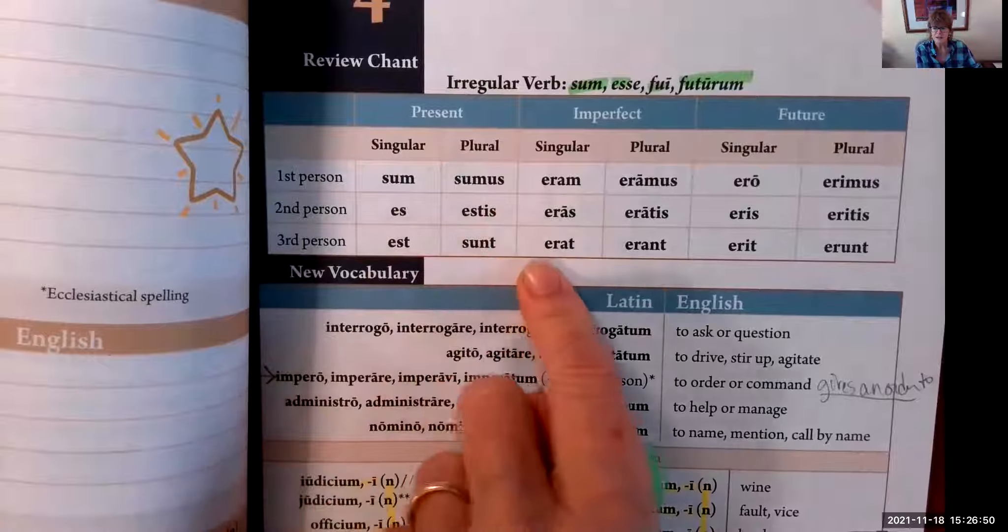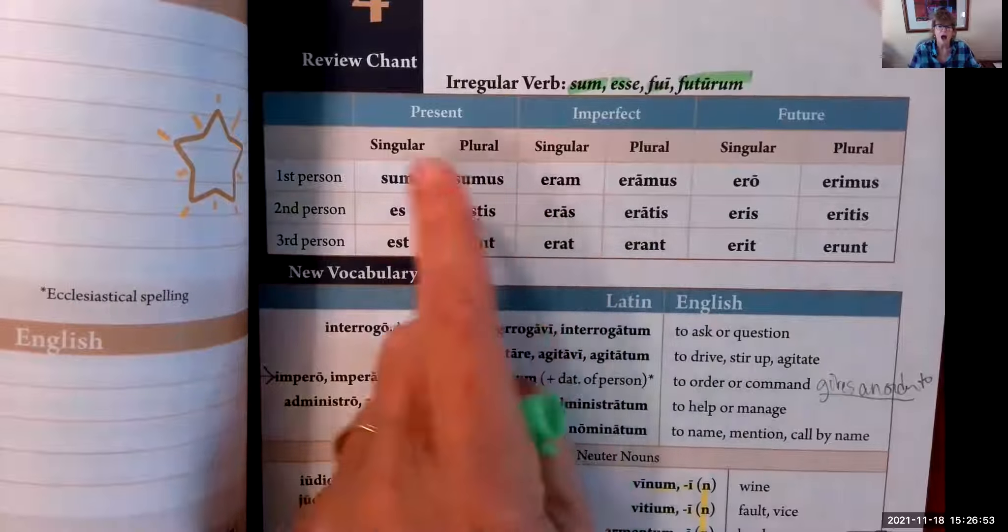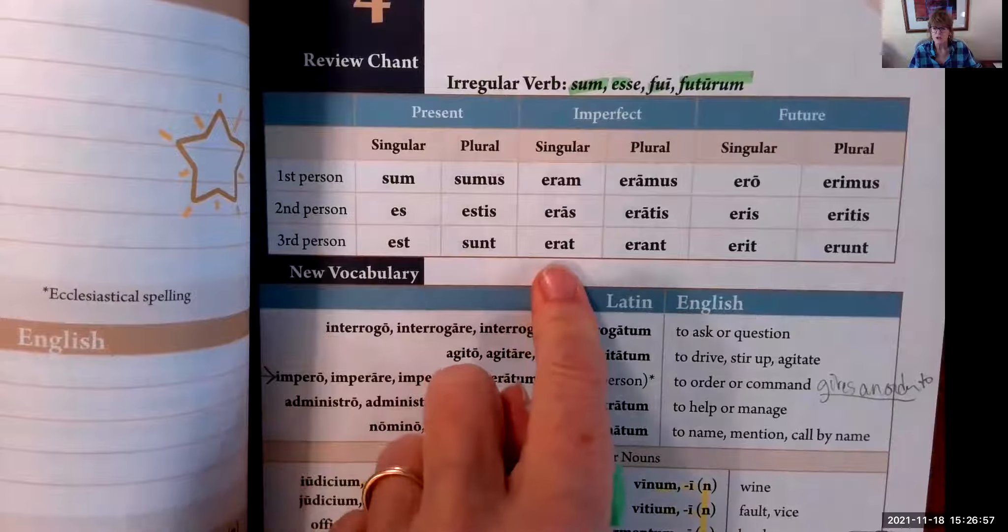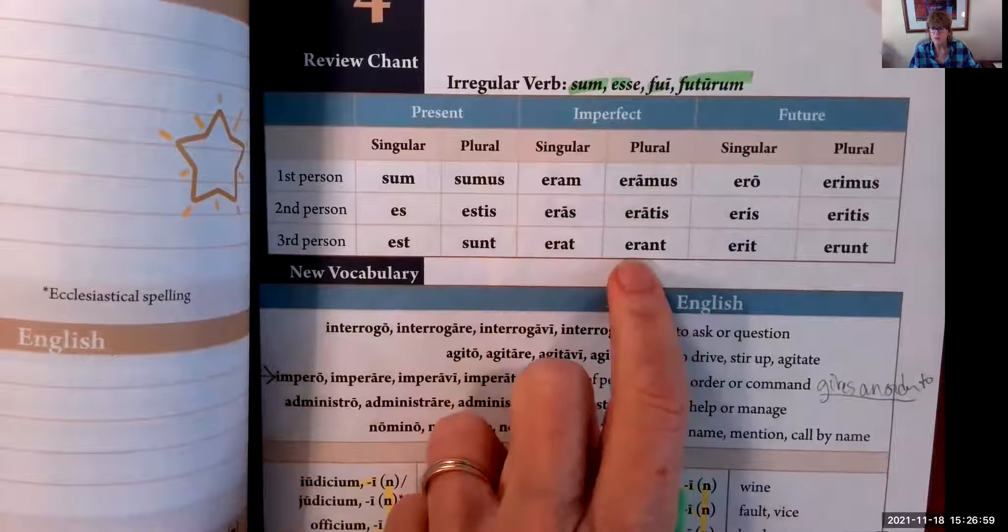Eram, eras, erat, eramus, eratis, erant. I was, you were, he/she/it was, we were, you all were, they were.